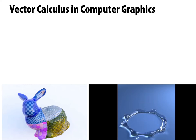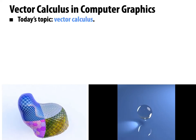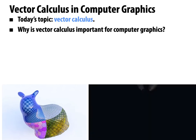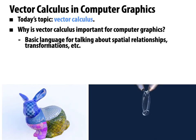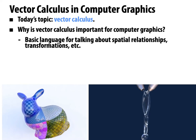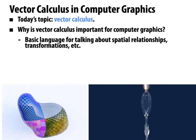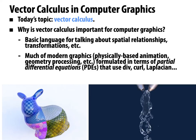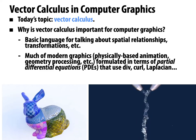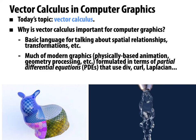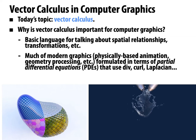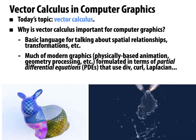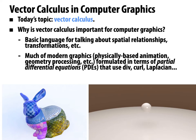Today we're going to talk about vector calculus or multivariable calculus. We always want to understand why we're doing what we're doing — why is vector calculus important for computer graphics? The basic reason is that it gives us a language for talking about spatial relationships, rates of change, transformations, and so forth. Much of modern computer graphics is formulated in terms of partial differential equations (PDEs) that use divergence, curl, Laplacian, and so forth. This lets us do things from physically based animation and geometry processing and image processing using the language of rates of change.